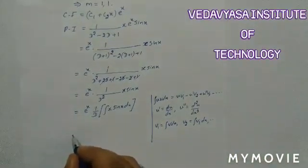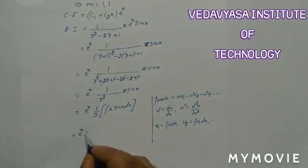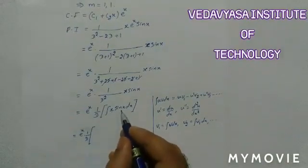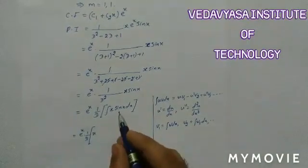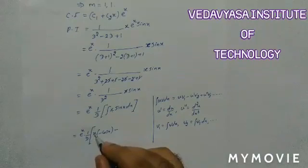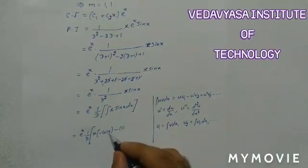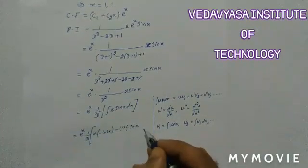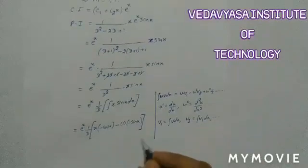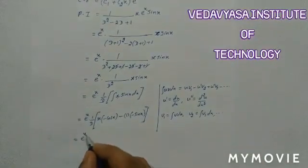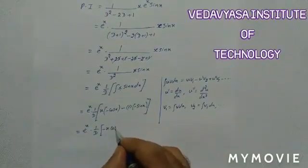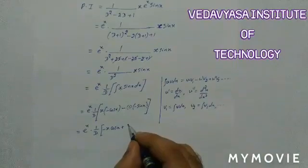Applying the Bernoulli formula with u = x and v = sin x: v₁ = ∫sin x dx = -cos x; u′ = 1; v₂ = ∫(-cos x) dx = -sin x; u″ = 0, so we stop. This gives eˣ · (1/D) · [x·(-cos x) - 1·(-sin x)] = eˣ · (1/D) · (-x·cos x + sin x).